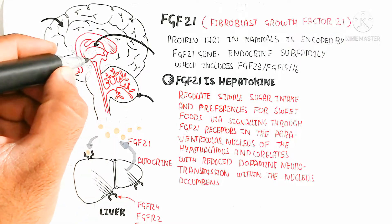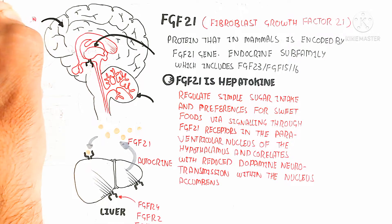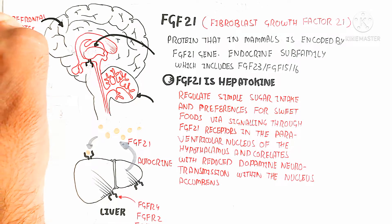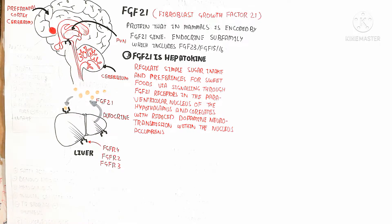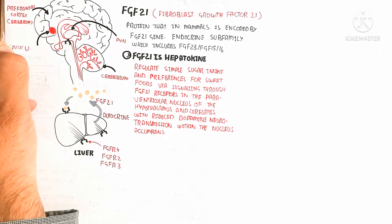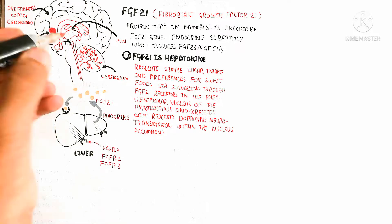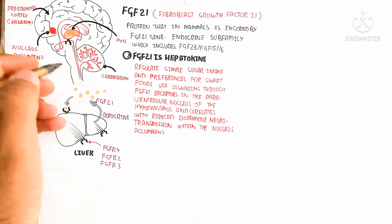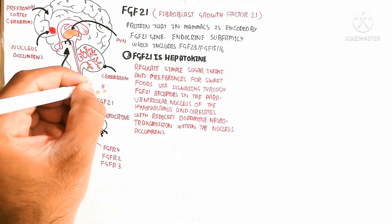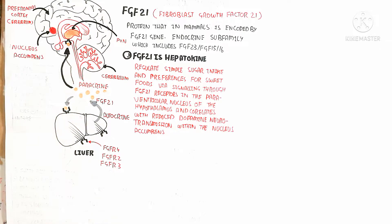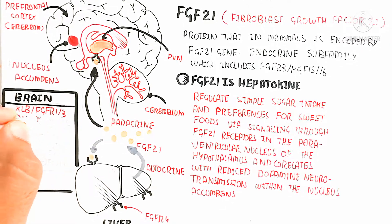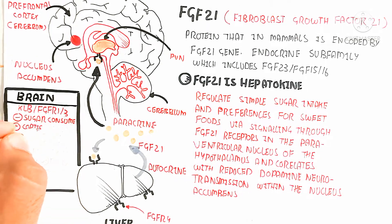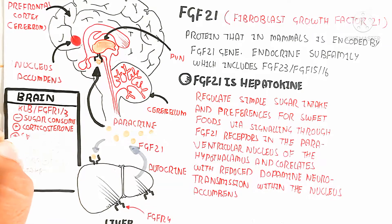Here you can see the brain, which contains the prefrontal cortex, cerebral cortex, and paraventricular nucleus. This region contains receptors — specifically KLB receptor and FGF receptors one and three. The hypothalamus contains the paraventricular nucleus in its upper part, and here you can also see the nucleus accumbens, which correlates with reduced dopamine neurotransmission.